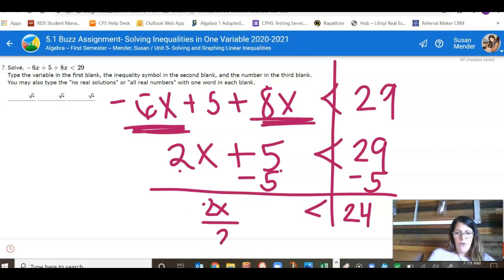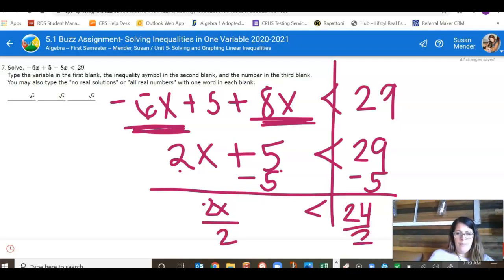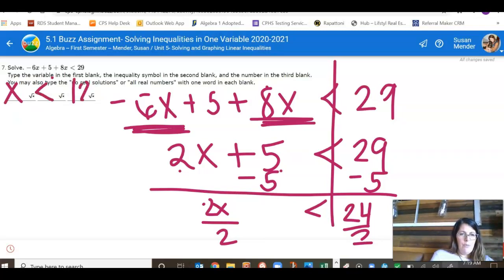Now to get rid of that 2, I divide both sides by 2. So I have x less than 12.